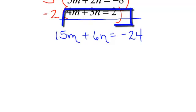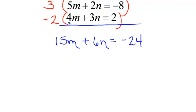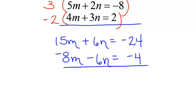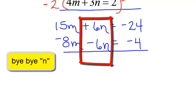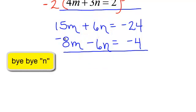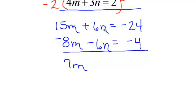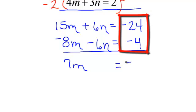The second equation, I am multiplying everything by negative 2. Negative 2 times 4m is negative 8m. Negative 2 times positive 3n is negative 6n. And don't forget, multiply everything, so negative 2 times 2 is negative 4. That's a common mistake. Now look at this. We can do a little adding and our n's will be out of there. Let's add them up. What's 15m and negative 8m? It will be positive 7m. Sure enough, positive 6n and negative 6n are gone.